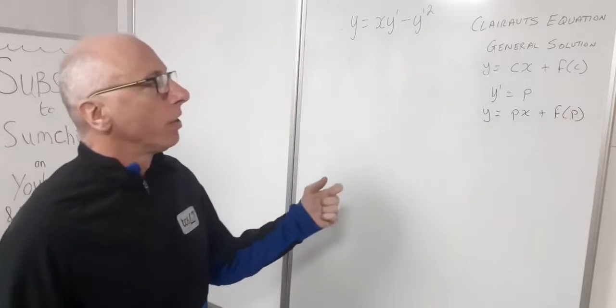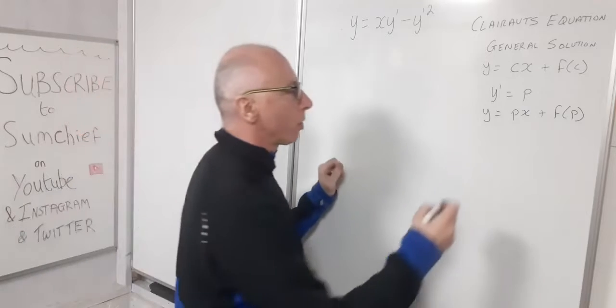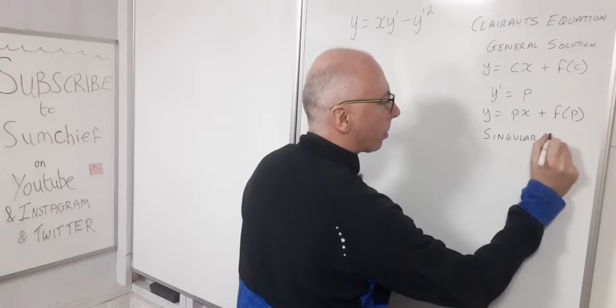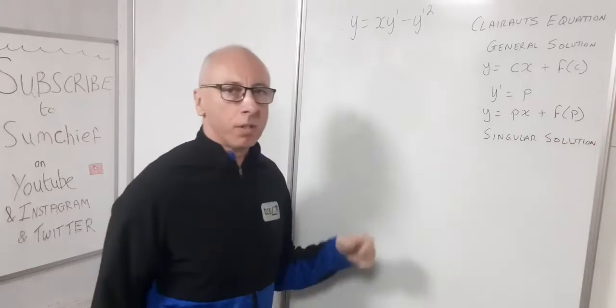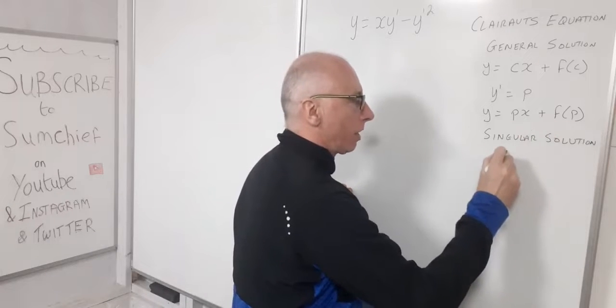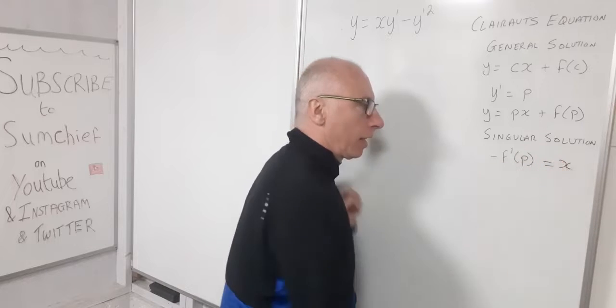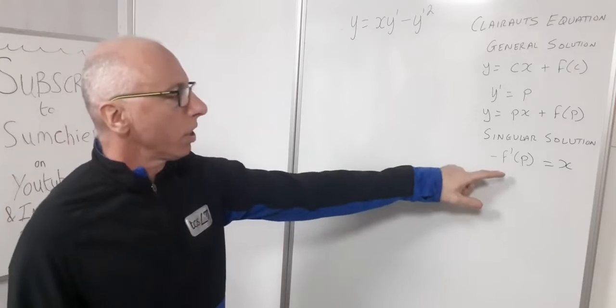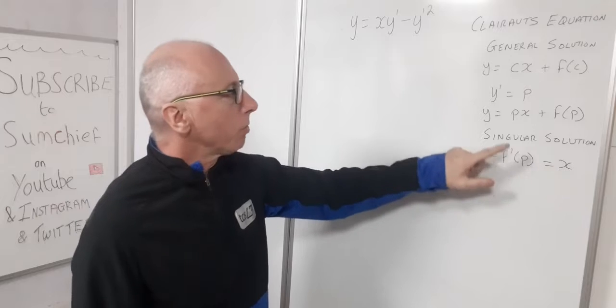Now that leads us on to the next part of our building block which is called the singular solution. So the singular solution, what that entails is we have taken this part here minus f prime p that equals x.